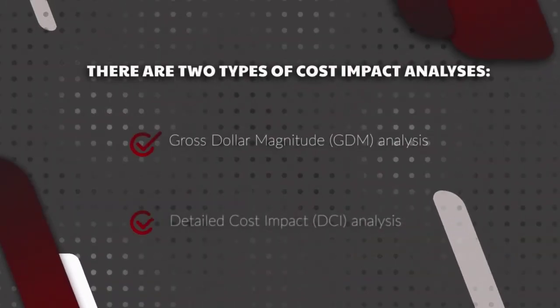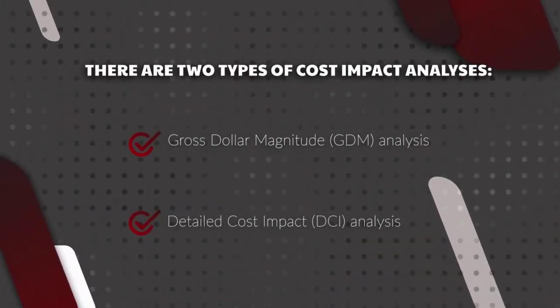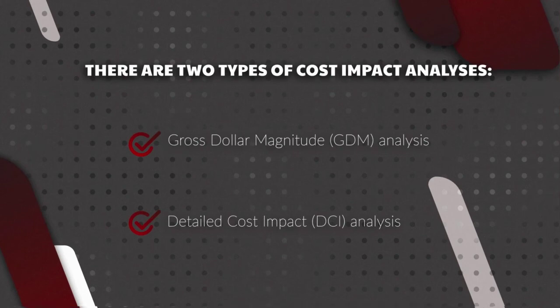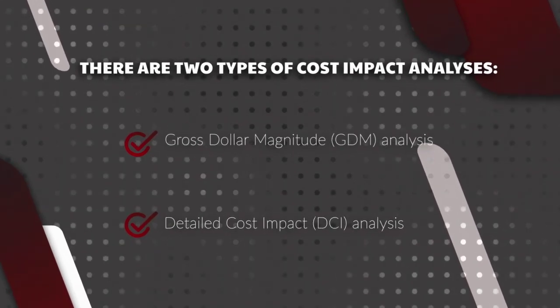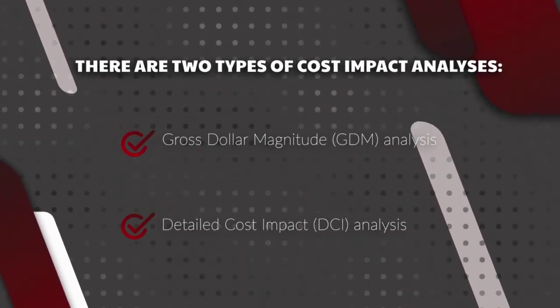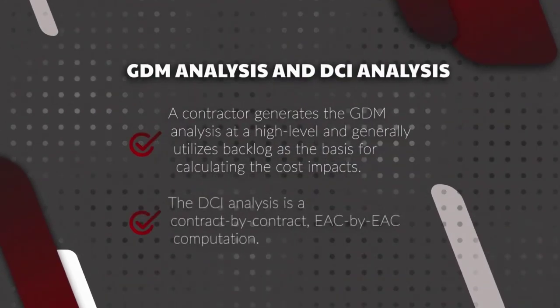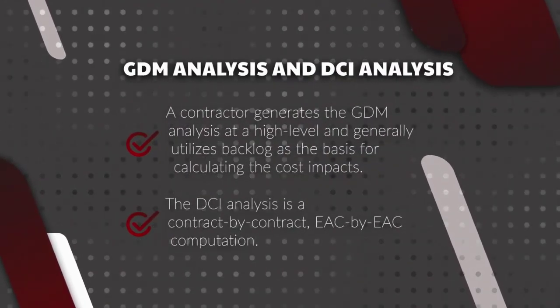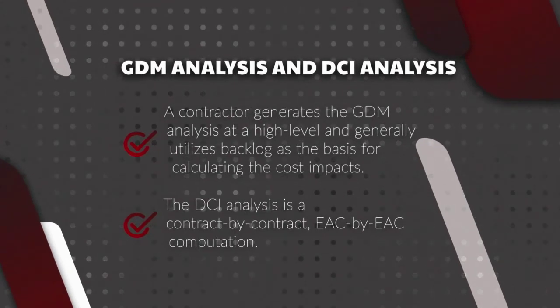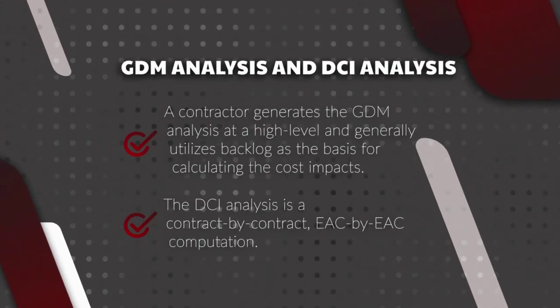There are two basic types of cost impact analysis. One is gross dollar magnitude, known as GDM, and the other is a detailed cost impact analysis. A contractor generates a GDM analysis at a high level and generally utilizes backlog as the basis for calculating the cost impact.